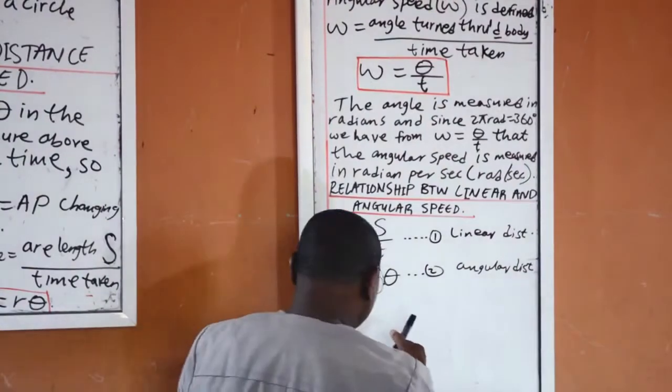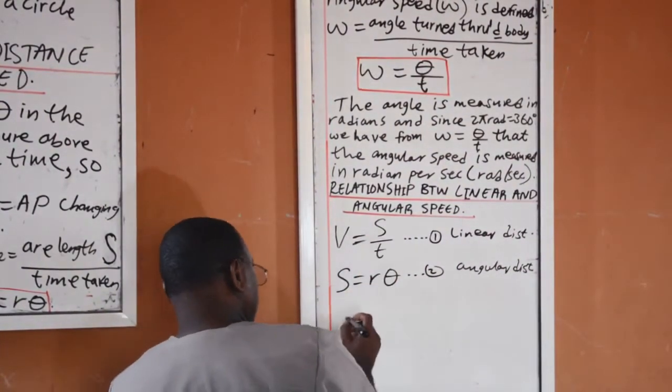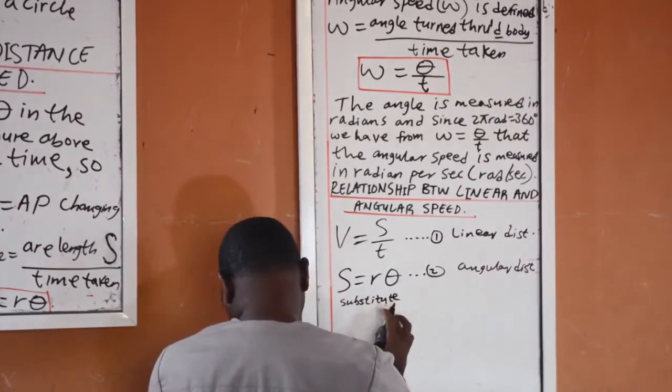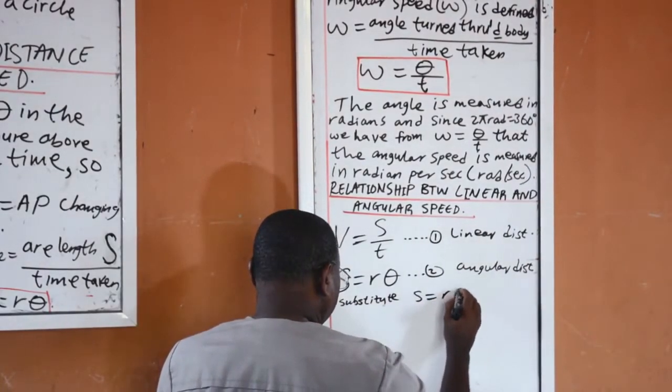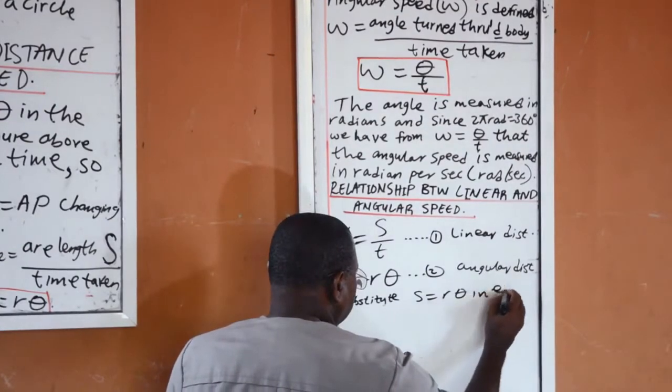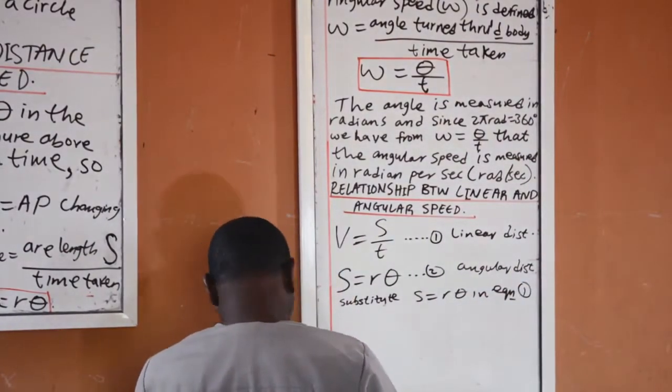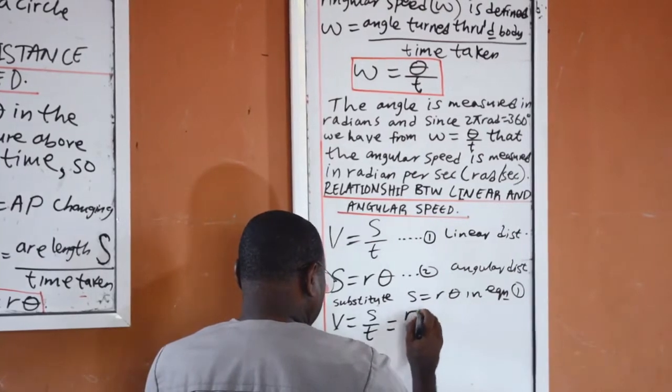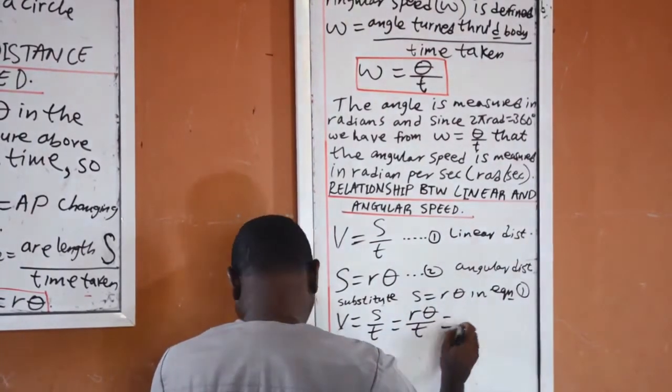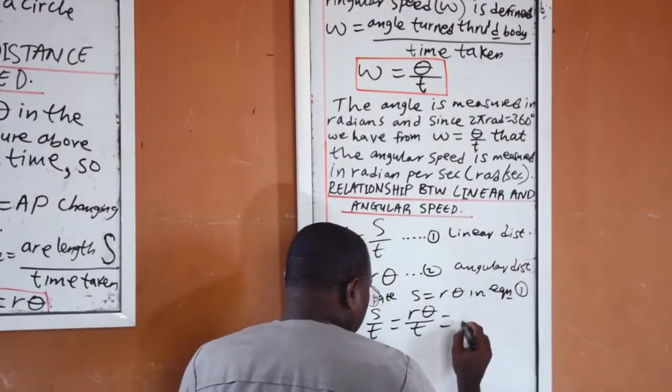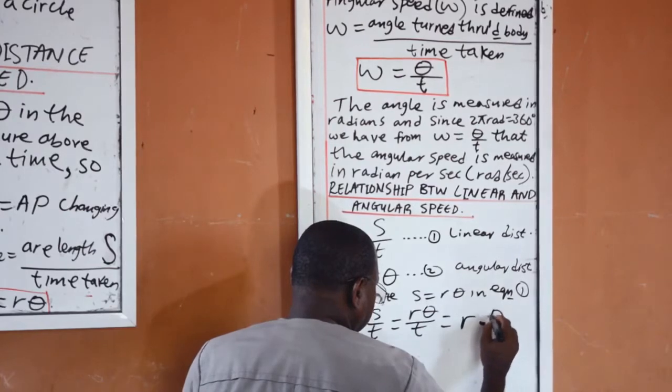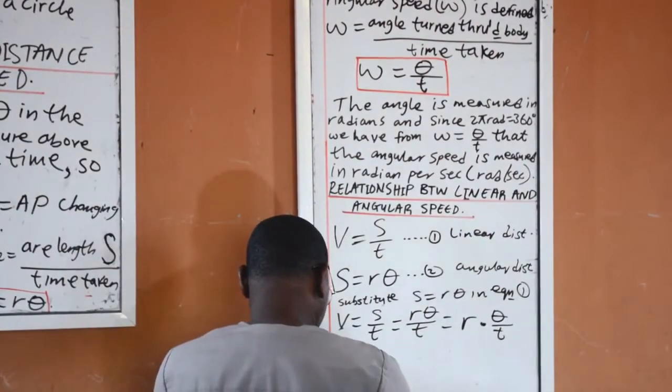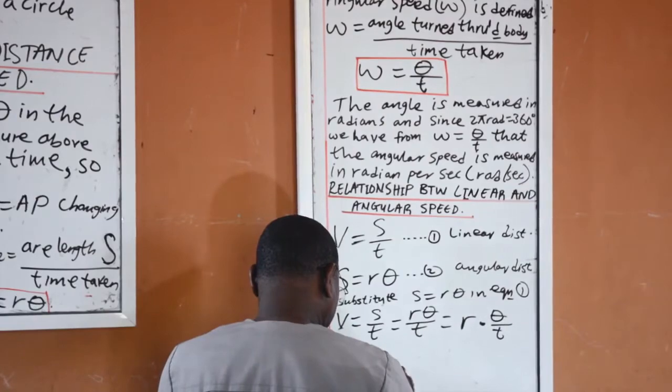When we substitute s equal to r theta in equation 1, v is equal to r theta over t. And this one will give us r multiplied by theta over t. And omega is equal to theta over t.